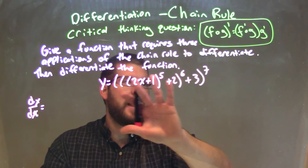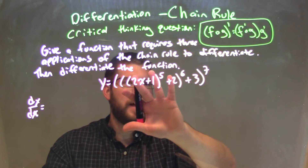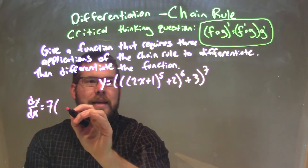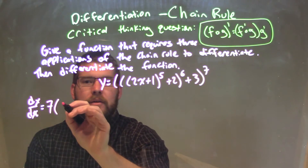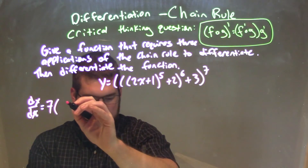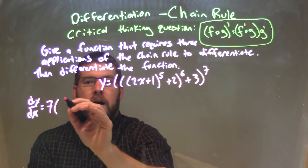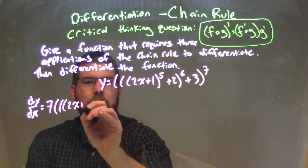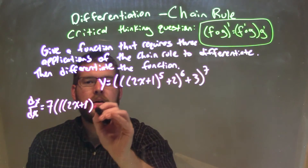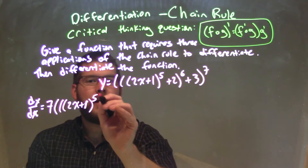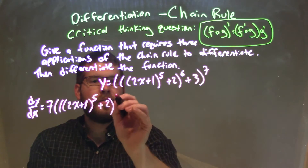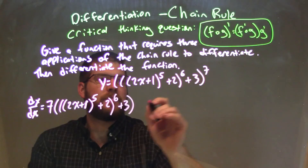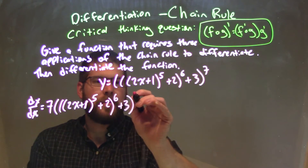Think of this whole thing as just x — derivative of that to the seventh power, power rule — seven times whatever's on the inside. So we put triple parentheses: (2x + 1) to the fifth power, plus two, to the sixth power, plus three — subtract the exponent by one — to the sixth power.